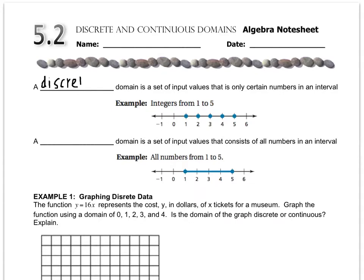Remember, domain is all the x values. What it means to be discrete is that there's only certain numbers in the interval. If you look here, only the integers are being included, not all numbers. So integers from 1 to 5 is different from all numbers 1 to 5.